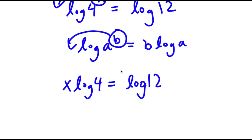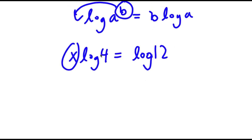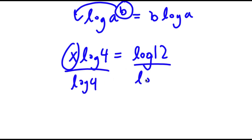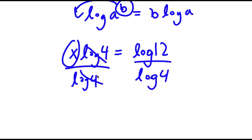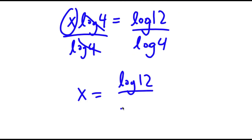We obviously want to isolate x here. So to do that, I have to get rid of log 4 by dividing on both sides. These two cancel out, and now I have x is equal to log 12 over log 4.